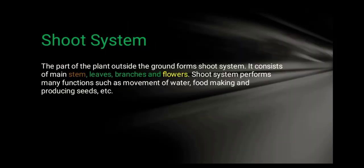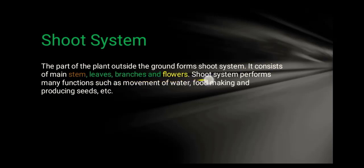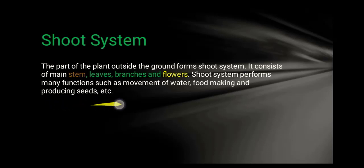The shoot system consists of the part of the plant above the ground. It consists of the main stem, leaves, branches, and flowers. The shoot system performs many functions such as movement of water, food making, and reproduction.